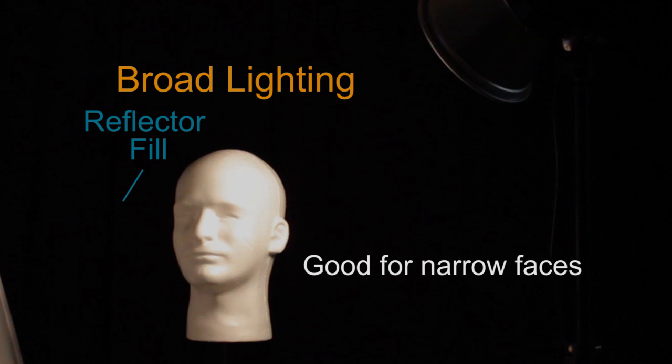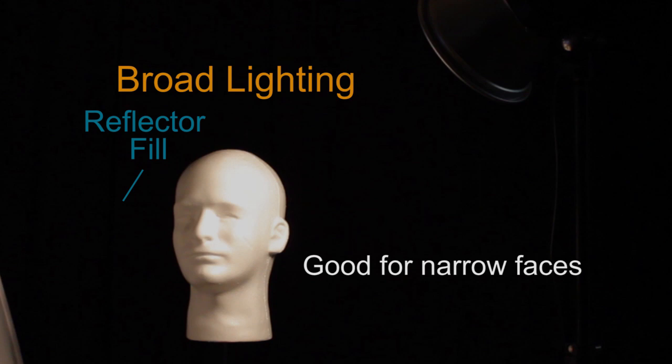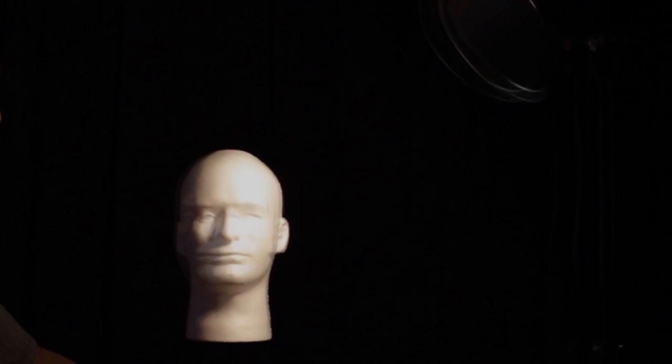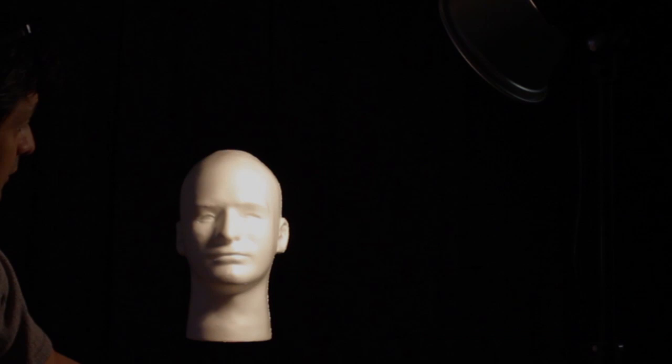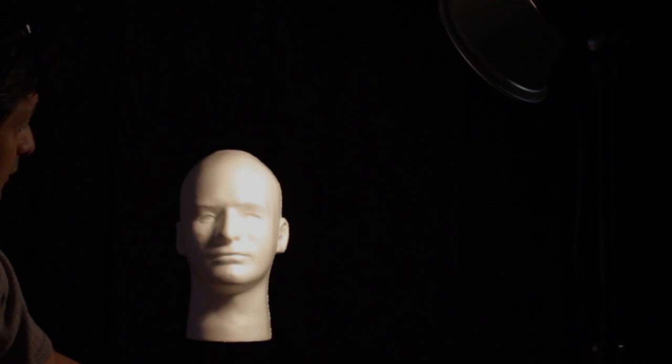You can add varying degrees of fill light with any of these patterns, and that's what I'm doing here. Turn the head a little and we can get the Rembrandt lighting pattern. Again, a very classic look. Notice the triangle of light here, which is one of the characteristics of this pattern. A variation is the loop lighting pattern, where the shadow just beneath the triangle is broken.